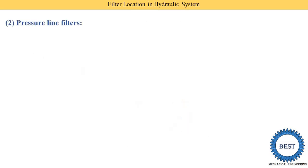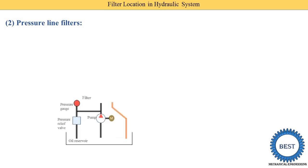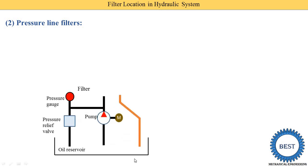The second location is the pressure line filter. In the reservoir the pressure is atmospheric, but pressure line filter means the filter is provided at the outlet side of the pump, where the pressure is higher. Here you can see the oil reservoir, suction pipe, pump driven by a motor, and the outlet of the pump connected with a pressure gauge and relief valve. The filter is provided on the pressure side.